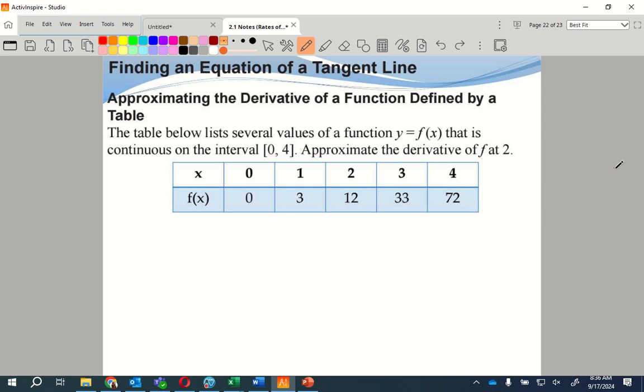The table lists several values of a function that is continuous on the interval 0 to 4. Approximate the derivative at 2. So what I'm going to do is start here. I'm going to find the slope in between 1 and 2. That would be 12 minus 3 over 2 minus 1, which is going to give me 9.